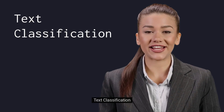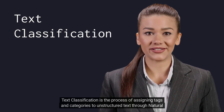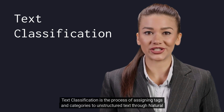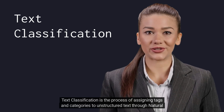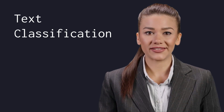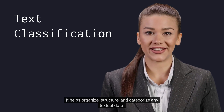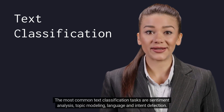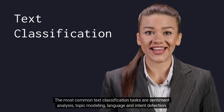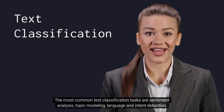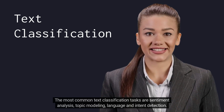Text classification is the process of assigning tags and categories to unstructured text through natural language processing. It helps organize, structure, and categorize any textual data. The most common text classification tasks are sentiment analysis, topic modeling, language and intent detection.